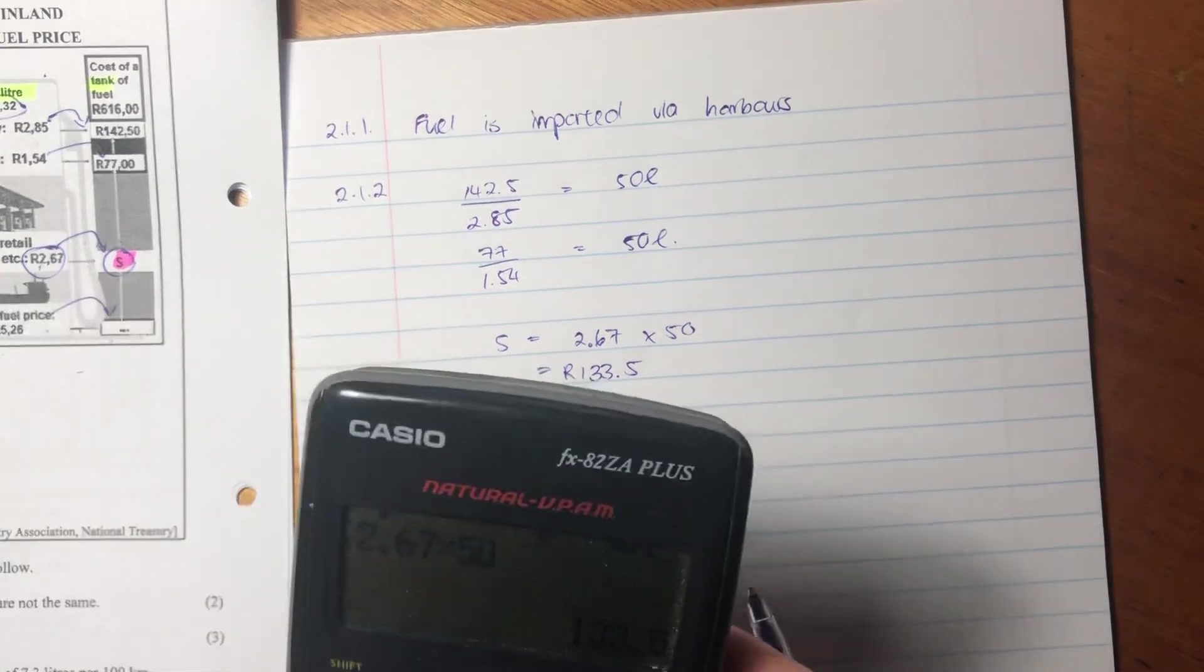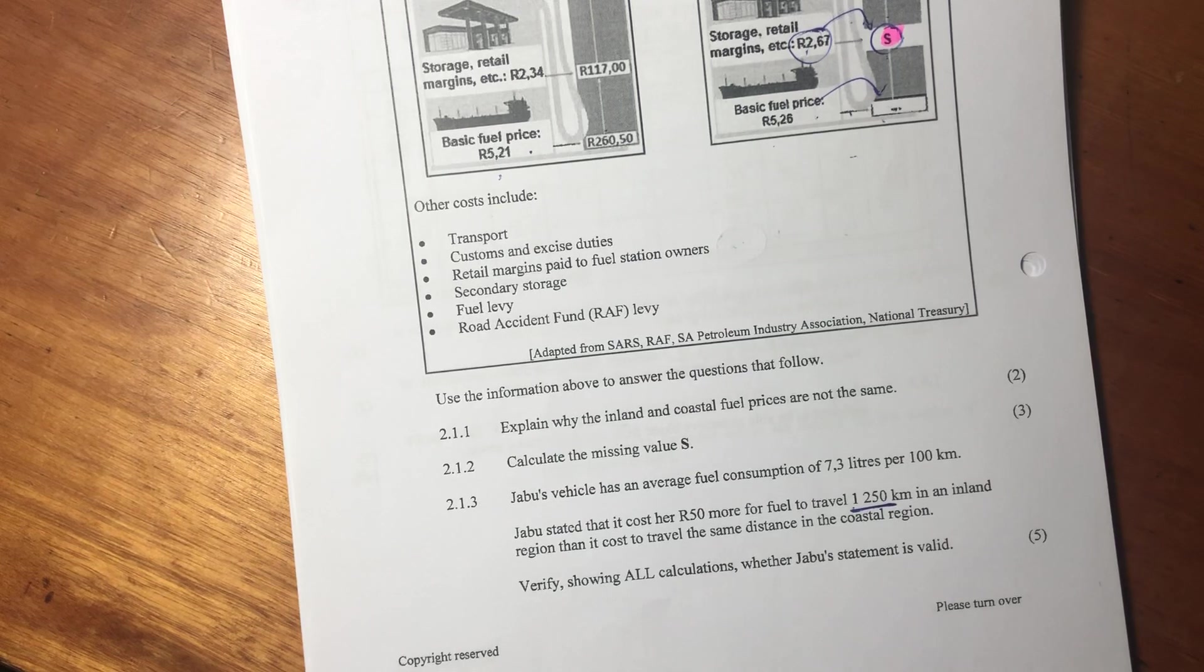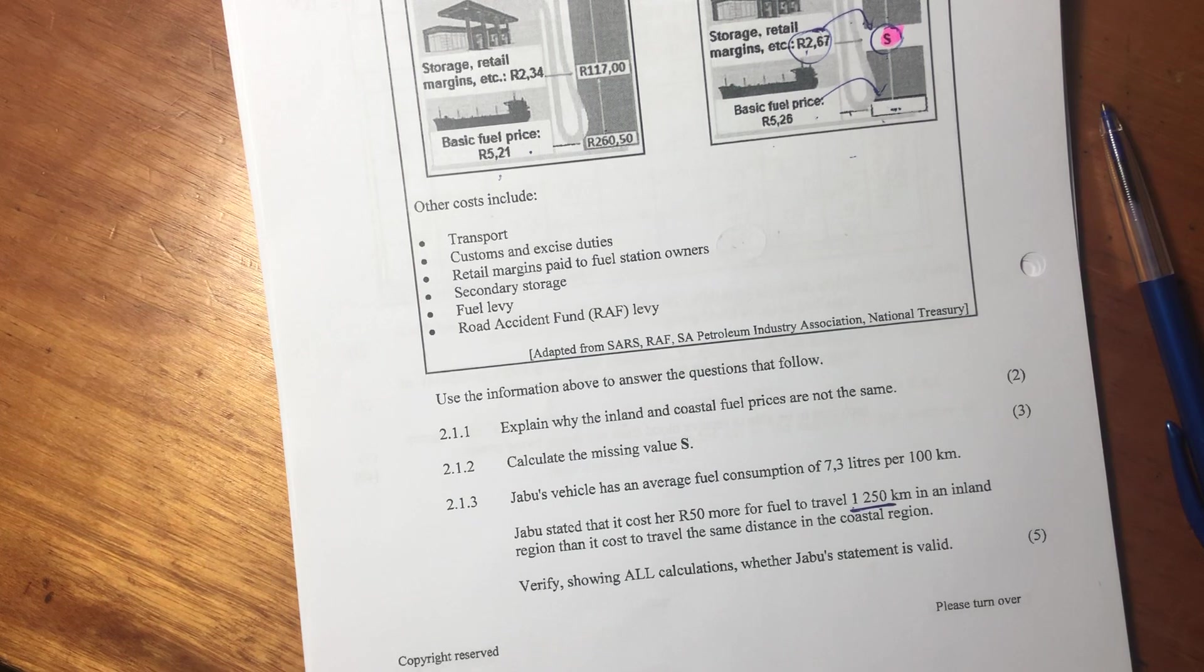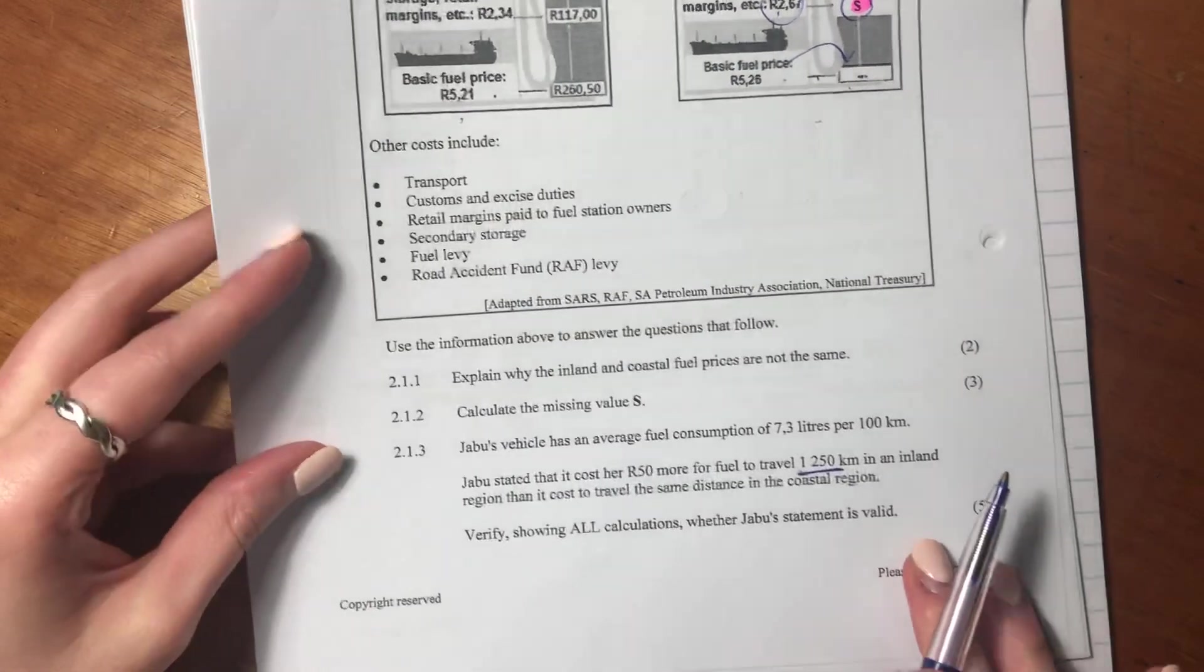So let's now go into the last question of this question, which is 2.1.3. It says Jabu's vehicle has an average fuel consumption of 7.3 liters per 100 kilometers. Then it says Jabu stated that it cost her 50 rand more for fuel to travel 1,250 kilometers in an inland region than it cost her to travel the same distance in a coastal region. Verify, showing all calculations, whether Jabu's statement is valid.